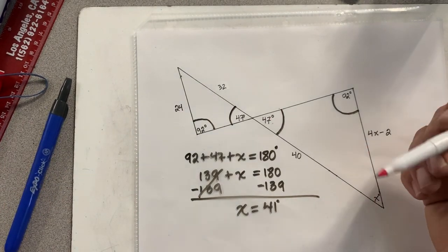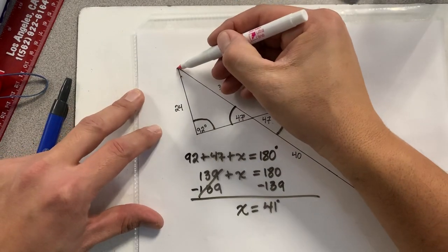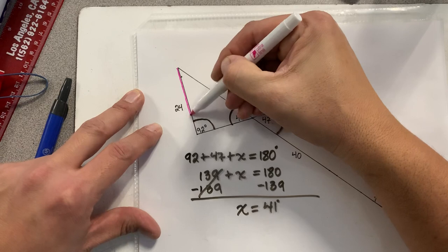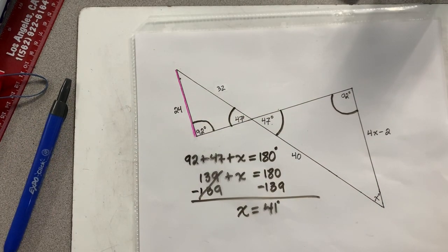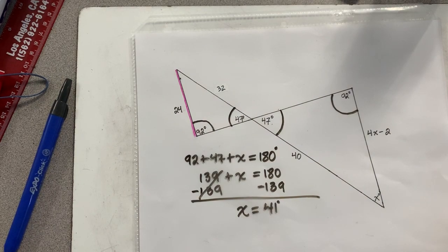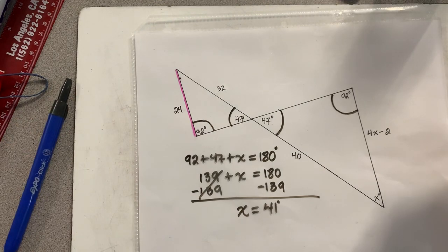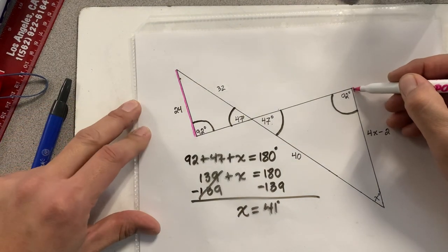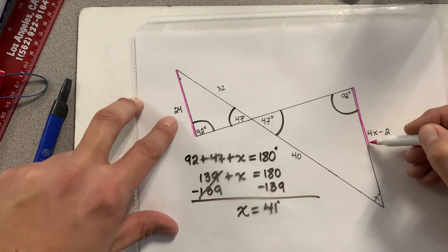So I'm going to take this pink marker right now and highlight 24. Jesse, if I highlight 24 on the bigger triangle, what side corresponds to 24? 4X minus 2, yeah. So this side right here corresponds to 24.